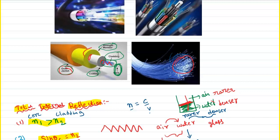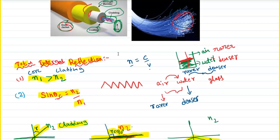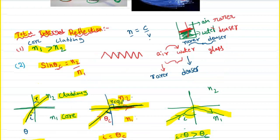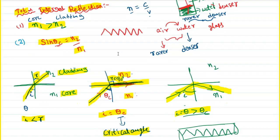An optical fiber is a thin, transparent dielectric material of cylindrical shape. It works on the principle of total internal reflection. The condition for total internal reflection is that the angle of incidence must be greater than the critical angle.